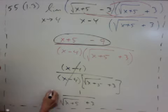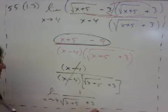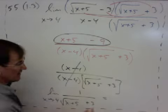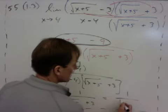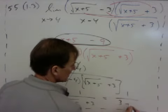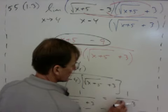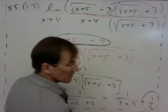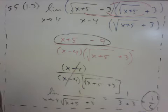And now we can let the limit, we can let x go to positive 4. And we do that, and we just plug it in here. And you can see, it's going to be 4 plus 5 is 9. The square root of that is going to be 3. So it's going to be 1 over 3 plus 3, which is going to be 1 sixth. So our answer there is going to be just 1 sixth.